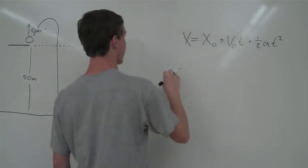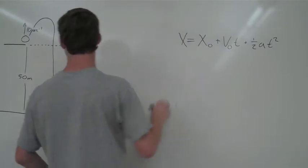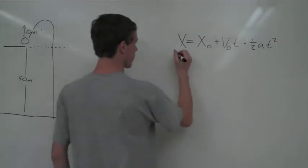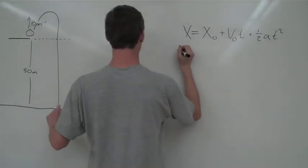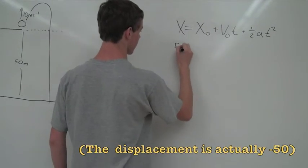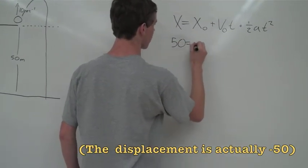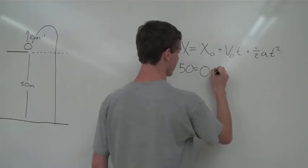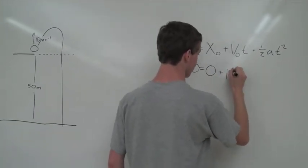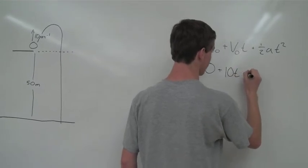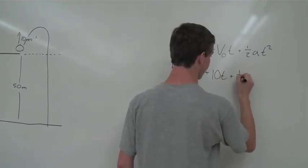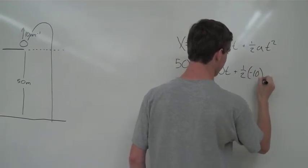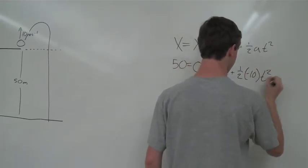Putting in our values, we'll set the origin at the cliff. The displacement when it reaches the ground is -50. Since the cliff is the origin, the initial displacement is zero, plus the given initial velocity of 10 times time, plus one-half of the acceleration, which is negative 10 because gravity acts in the negative direction, times time squared.